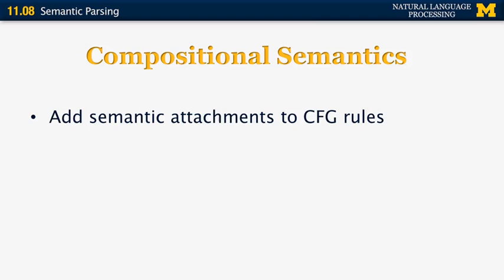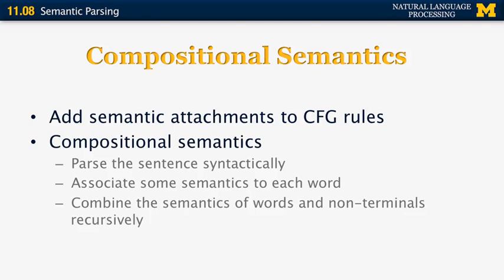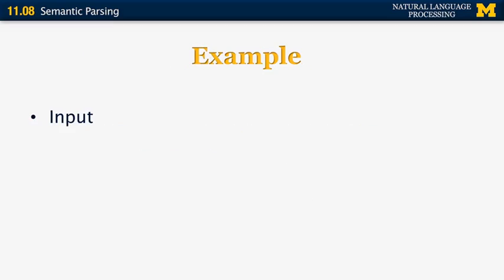Compositional semantics is done by adding semantic attachments to context-free grammar rules. We first parse the sentence syntactically, then associate semantics to each individual word, and use the context-free grammar and the semantic attachments to build semantic representations of all the non-terminal nodes. At the end, we get the semantics of the full sentence, associated with the root of the parse tree.